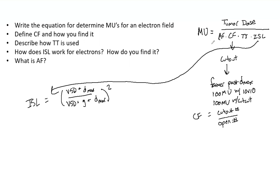If you have any questions about electron MU calculations, please comment below. Know what all the factors are and how to use them. Ideally you've used this in the clinic — you've measured the cutout factor, you know where to look up the applicator factor, you know how treat-to is used, and you know how to find the virtual source distance and the inverse square law for electrons. Thank you for watching and good luck studying.